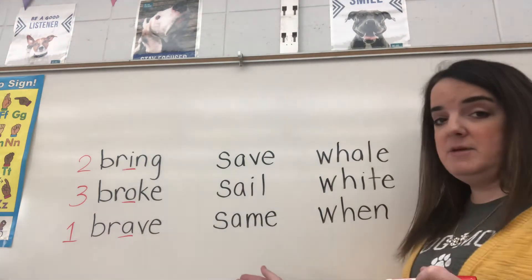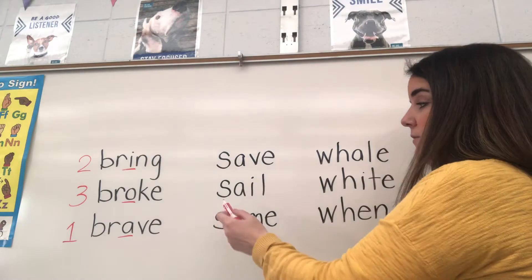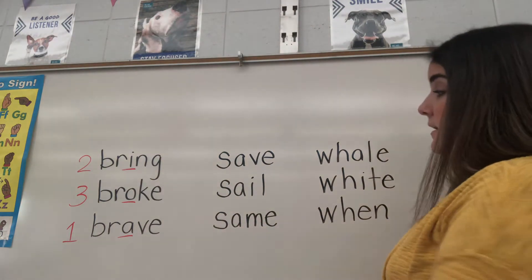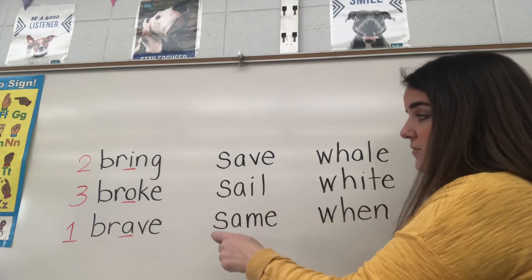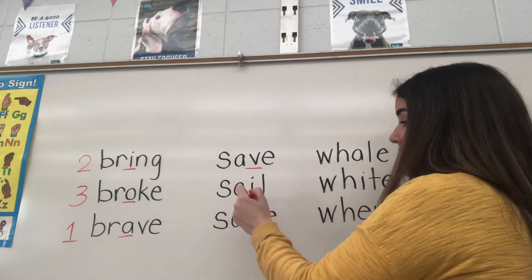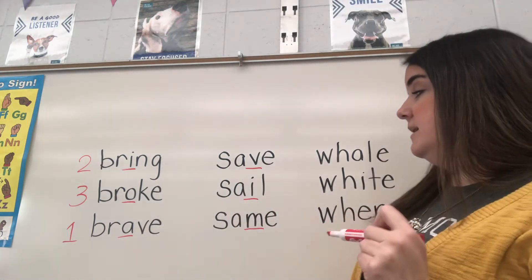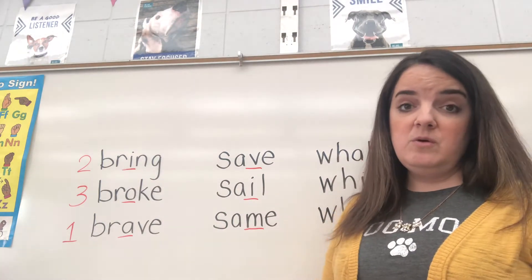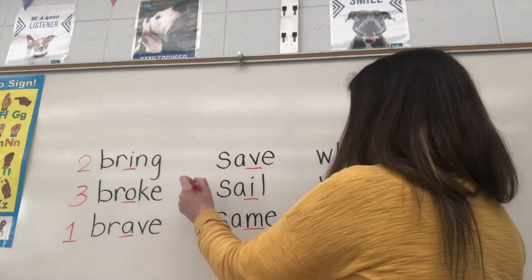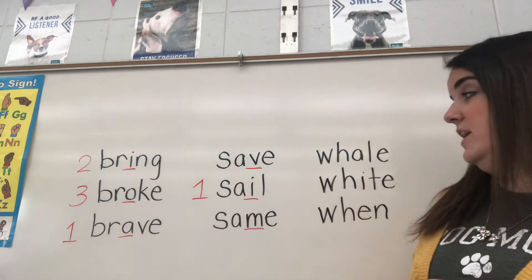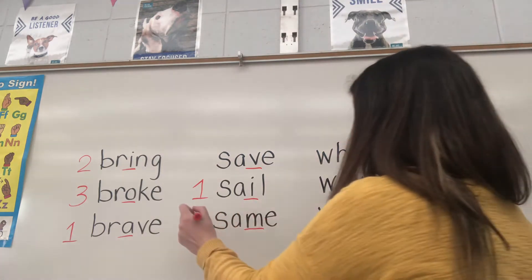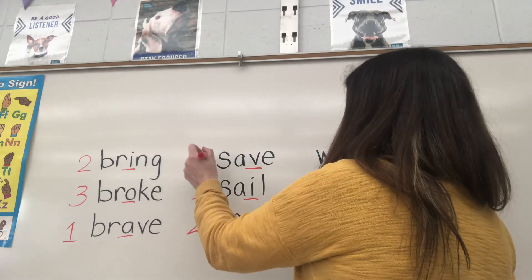Now let's go to the second column. We have the words save, sale, and same. If you notice, S, S, S — they're all the same in that first letter. So I'm going to go to my second letter, but once again they're all the same. So I'm going to move to my third letter. We have a V, an I, and an M. Looking at those three letters, which one is going to come first — the V, the I, or the M? The correct choice is sale — the I would come first. So sale would be my first word. What would be my second word, save or same? If you answered same, you are correct. Same would be my second, and then save would be third.